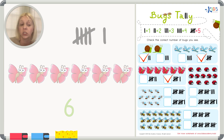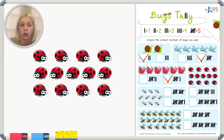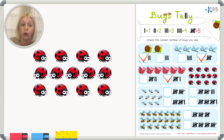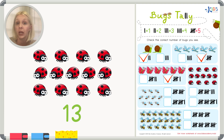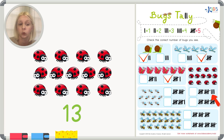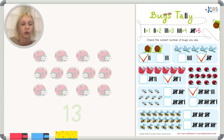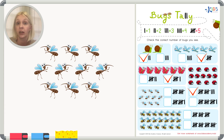Now we've got ladybugs — a lot of them. Count with me: one, two, three, four, five, six, seven, eight, nine, ten, eleven, twelve, thirteen. If we're making tally marks we need two groups of five plus three. We've got two groups of five — that's ten — plus one, two, three. The other option has three groups of five which is fifteen, and that's too many. So this is our correct answer.